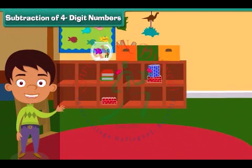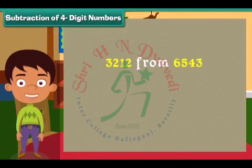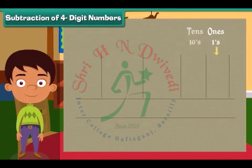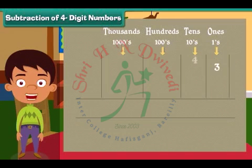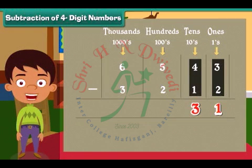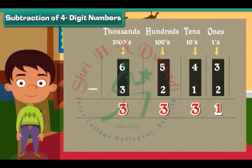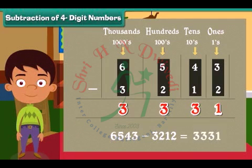Subtraction of four-digit numbers. Ben has now moved to solve subtraction. Let us subtract 3212 from 6543. Write the numbers in the respective columns. We start subtraction from the ones column: 3 minus 2 is equal to 1. Subtract tens: 4 minus 1 is equal to 3. Similarly, subtract hundreds and thousands: 5 minus 2 is 3, and 6 minus 3 is 3. So 6543 minus 3212 is 3331.